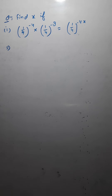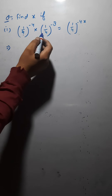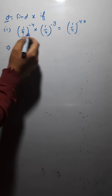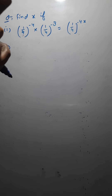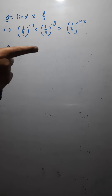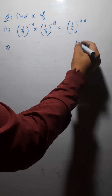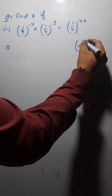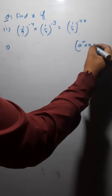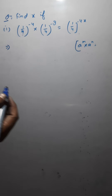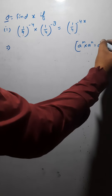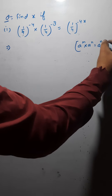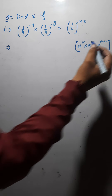Now let's solve this question. If the bases are same, the exponents are going to be added. We have already done this sort of question. If a raised to the power m is to be multiplied by a raised to the power n, then it would become a raised to the power m plus n.